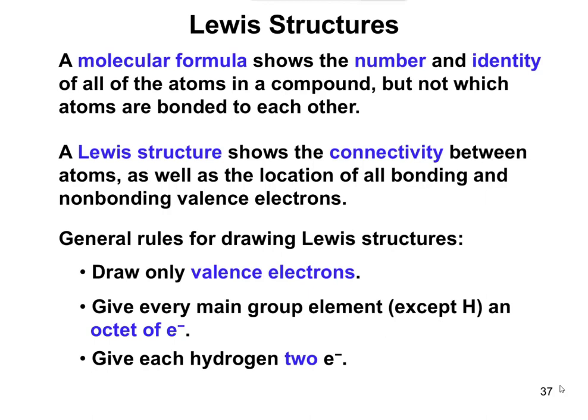Lewis structures show the connectivity between atoms, and they also show all of the bonding and non-bonding electrons. So a Lewis structure is, for instance, drawing one we've already looked at — CH4, which was on a previous slide. The molecular formula would just be CH4, and that tells you the atoms that are in it, but it doesn't tell you how they're connected. Whereas the Lewis structure tells you exactly how they are connected spatially, which is important. So we want to spend a little bit of time learning how to draw these, what we refer to as Lewis structures.